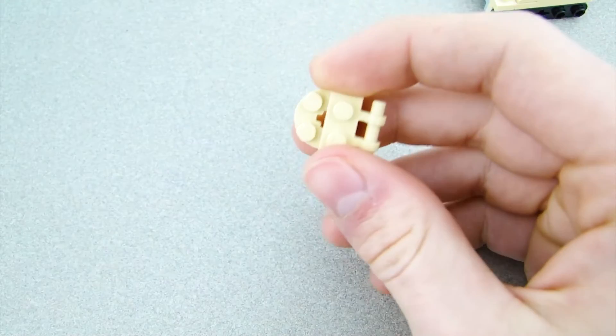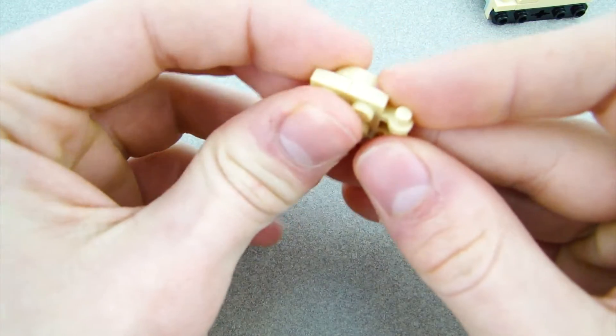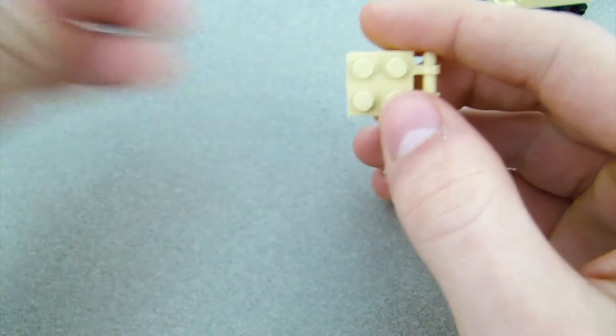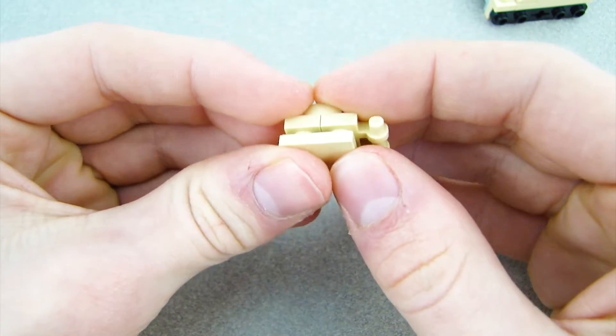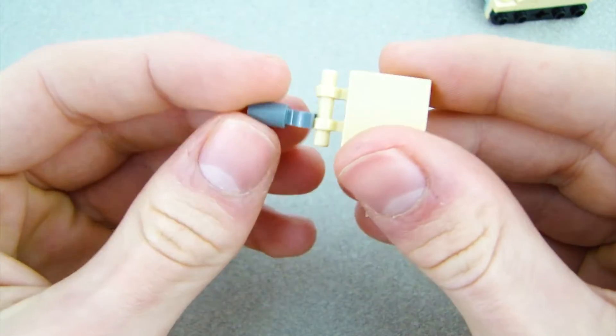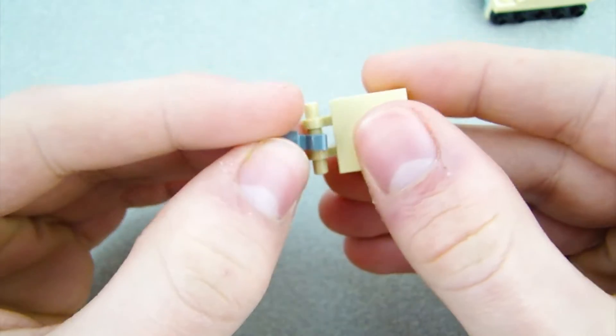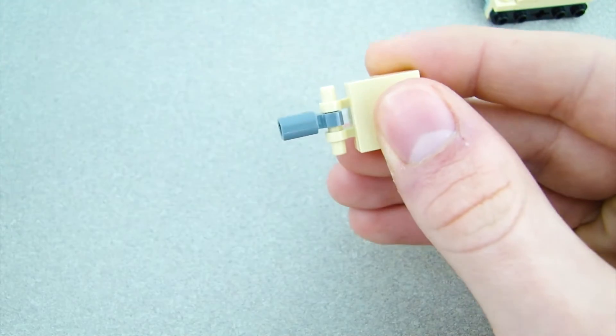Get this piece and put that on top of there with a 1x2 right there. And then put a tile right there. Put this weird looking piece. I have no idea what this is called. That just clips in the middle of there.